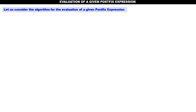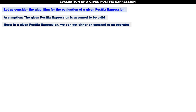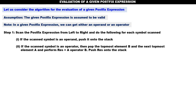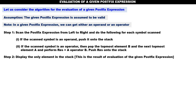Now, directly we should go to the algorithm. The given postfix expression is assumed to be valid — we are not checking validity. Step one: scan the postfix expression from left to right and do the following for each symbol. If the scanned symbol is an operand, push it onto the stack. If it is an operator, pop the topmost element into B, next topmost element into A, perform RES = A operator B, and push RES onto the stack. After all symbols are processed, display the only element in the stack — this is the result. Step three: stop.